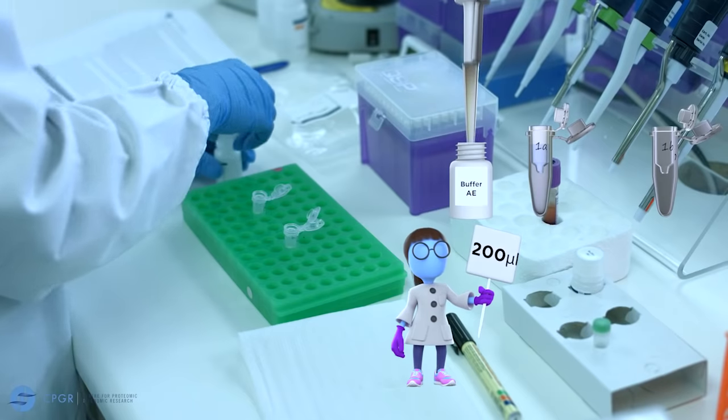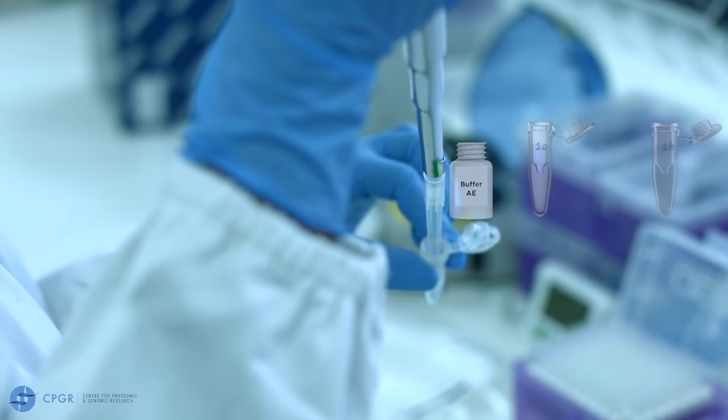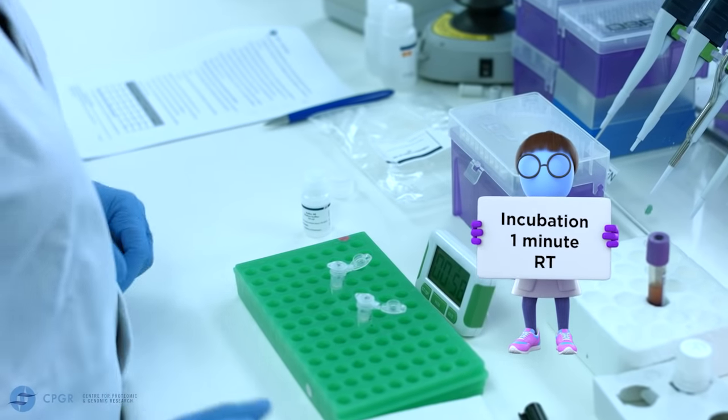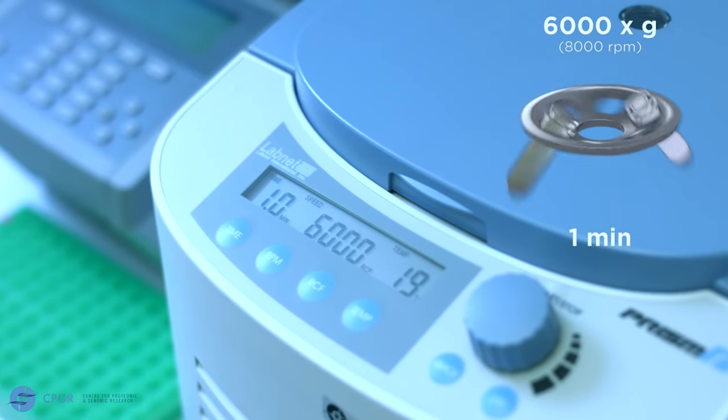Add 200 microliters of AE buffer to each spin column, remembering to change tips between samples. Incubate for one minute at room temperature. Centrifuge for one minute at 6,000 g, that's 8,000 rpm.